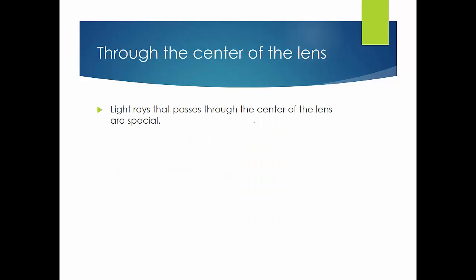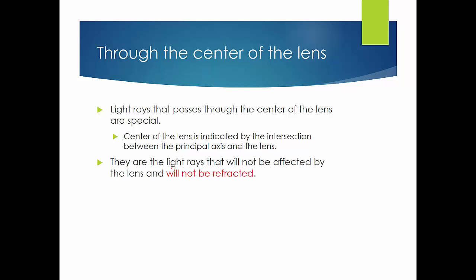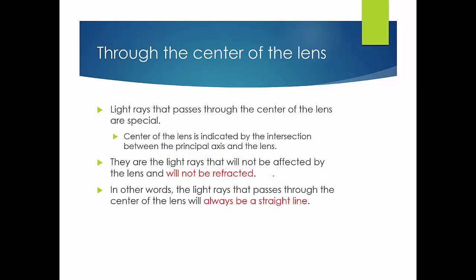The second light ray passes through the center of the lens, which is indicated by the intersection between the principal axis and the lens. Light rays that pass through the center of the lens are special: for a converging lens, any light ray passing through the center will not be refracted and will travel in a straight line.